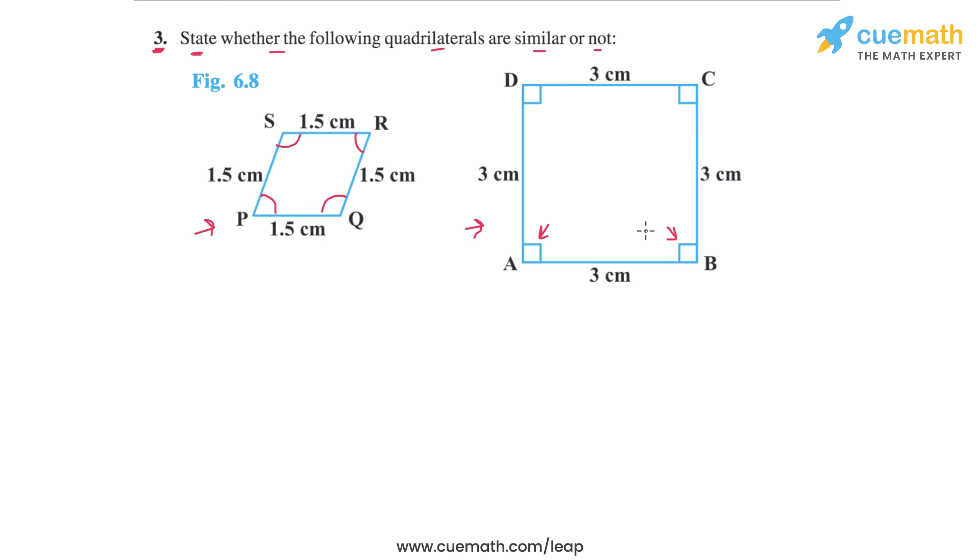Well, you would compare the corresponding sides and the corresponding angles. So if we compare the corresponding sides, say PQ, this side here, and AB, this side, we see that the ratio of each pair of corresponding sides is 1.5 cm by 3 cm. So let's write this fact.